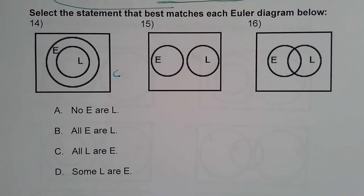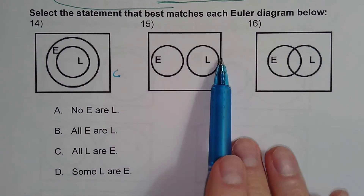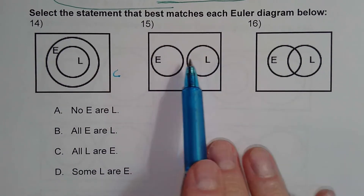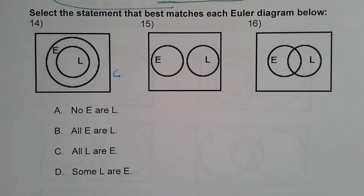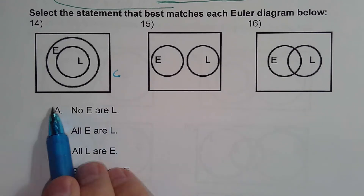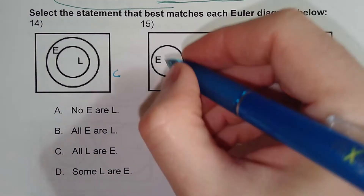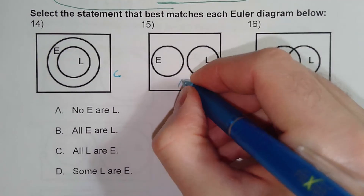For number 15 there's no overlap between the two sets, so that means 'no E are L' or 'none.' That would match statement A. So number 15 would be statement A.